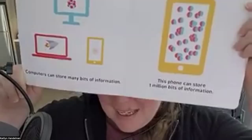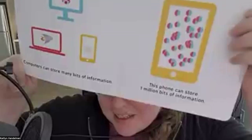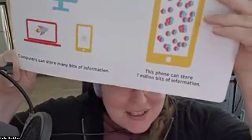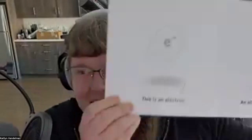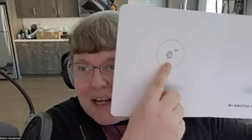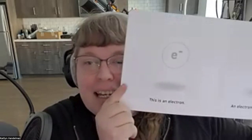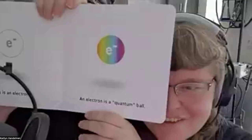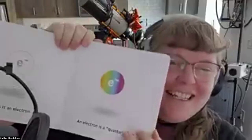There are a lot of dots — the printer ink dots are the million dots. And this is an electron. The letter 'E' is for Explorer and for electron, and there's a little bar meaning negative because electrons have a negative charge. An electron is a quantum ball — the 'woke electron,' born in California.